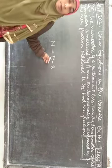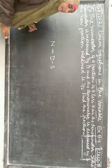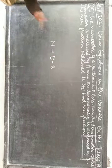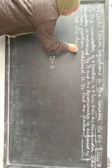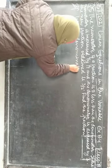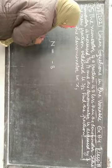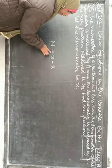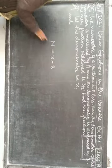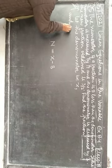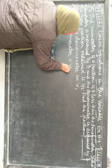Ab sabse pehle aapko denominator pata hona chahiye. Kisi denominator mein se 8 less karne ke liye, aapko denominator pata hona chahiye — aapko yahan denominator bhi nahi malum. So, let the denominator be x. Ab yahan denominator ki jagah x likh dete hain, to numerator kitna ho gaya? x minus 8. Ek aap value daaliye, doosre ki apne aap value ban jaati hai. And numerator is equal to x-8.